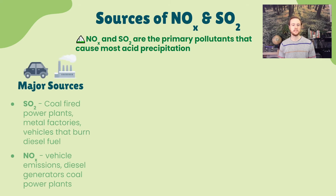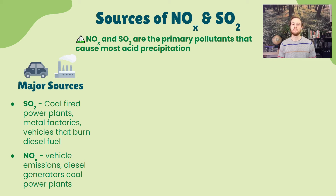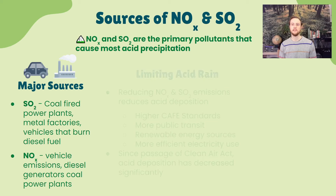So what are the major sources? Coal-fired power plants are the major source of SO2, along with metal factories and vehicles that burn diesel fuel, which is higher in sulfur content — things like big trucks. In terms of NOx, the number one source is vehicle emissions.